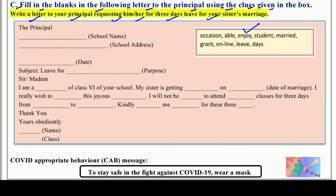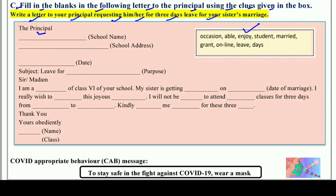यह बिल्कुल ऊपर वाले format की तरह है. सबसे पहले आपका school का name - जैसे यहाँ पर for example GBSSS यानि Government Boys Senior Secondary School. फिर आप school का address लिख सकते हैं, जैसे Uttam Nagar, Delhi. उसके बाद date लिखेंगे जो आज की date है - 26 August 2021. वो date लिखनी है जब आप letter लिख रहे हैं.